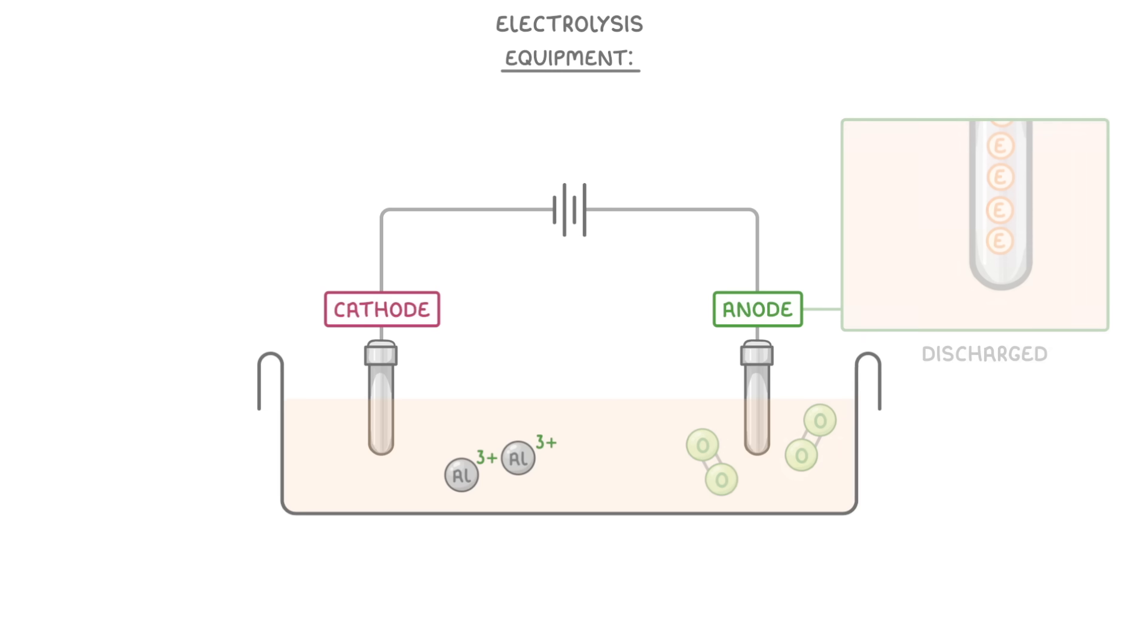The electrons, though, will be passed through the wire to the negative cathode on the left. As it's negative, it will attract the positive ions in the electrolyte, and can donate electrons to them. In our case, it will donate three electrons to each aluminum three plus ion, to form aluminum atoms, which will then slowly pool in the bottom of the beaker, as molten aluminum metal.